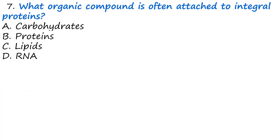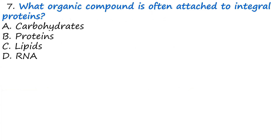Question seven: What organic compound is often attached to integral proteins? There are organic compounds that attach to integral proteins, making them form a complete glyco-conjugate. The answer is carbohydrates. Glycoproteins or glyco-conjugates are found attached to integral proteins in the cell membrane, so the organic molecules that attach to integral proteins are carbohydrates.